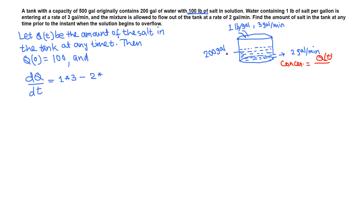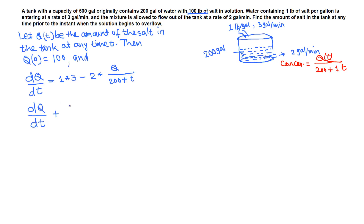Originally there are 200 gallons, and the water is increasing by one gallon per minute — three gallons in minus two gallons out — so the volume is 200 plus t. The concentration of the salt solution exiting is q over (200 + t), multiplied by the flow rate out of two, giving 2q/(200 + t). Bringing this to the left side: dq/dt + 2/(200 + t) · q = 3.